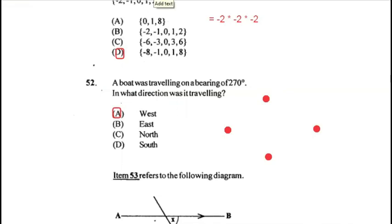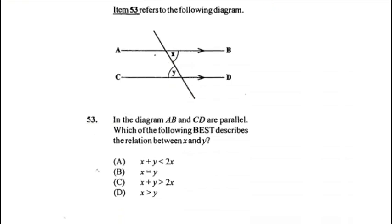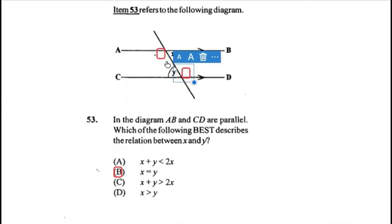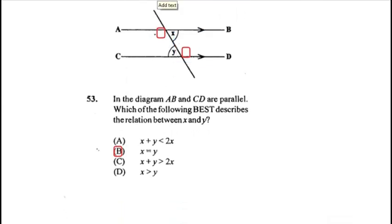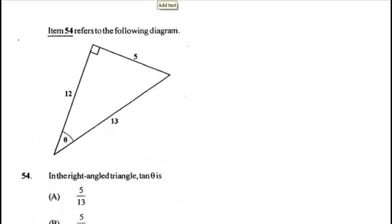Question 53: in the diagram, AB and CD are parallel. The relationship between x and y — x and y are interior angles, so they are congruent (equal): x = y, answer B. Interior angles and exterior angles between parallel lines follow the same principle, so just know that theory.